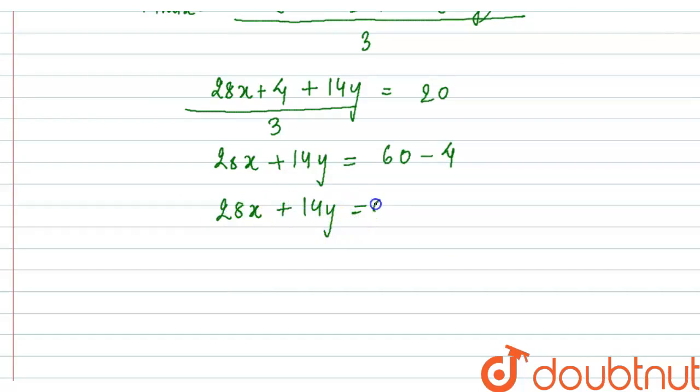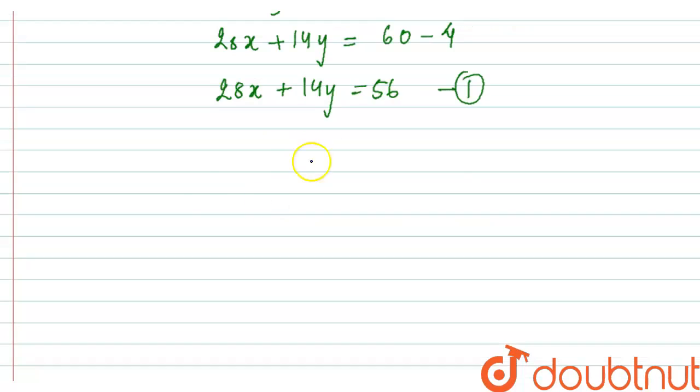Moving on for the next equation, we have the ratio as 1:2. So Mmix will be 1 times (14x + 2) plus 2 - let me just write it properly - plus 2 times 14y upon 3.